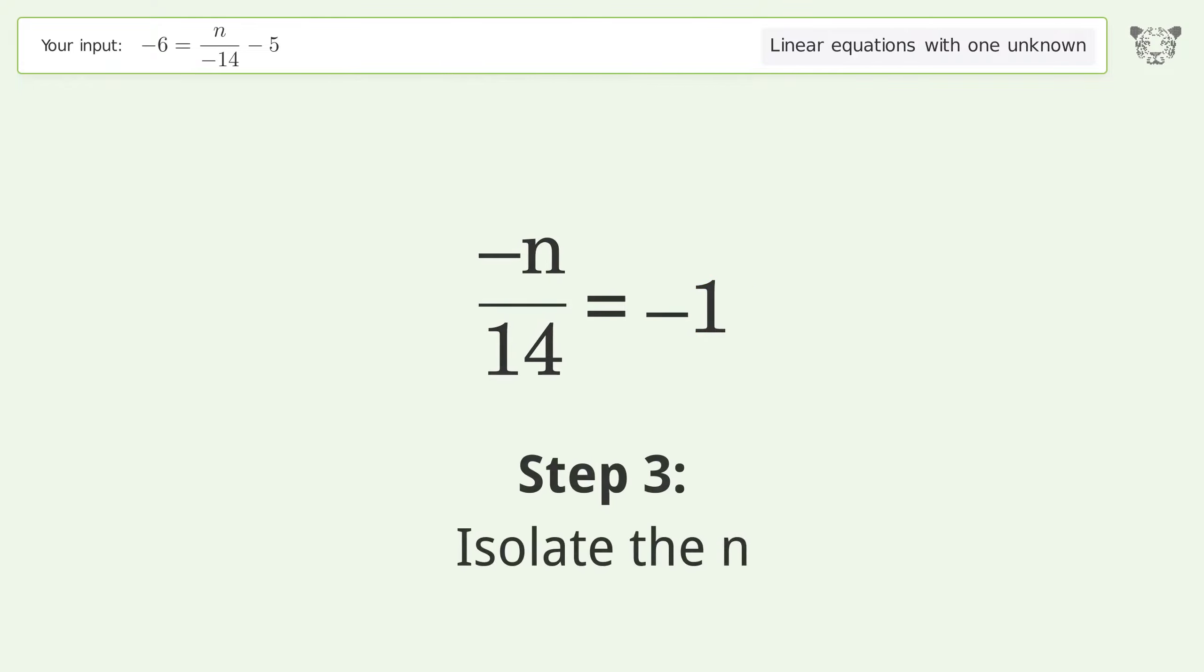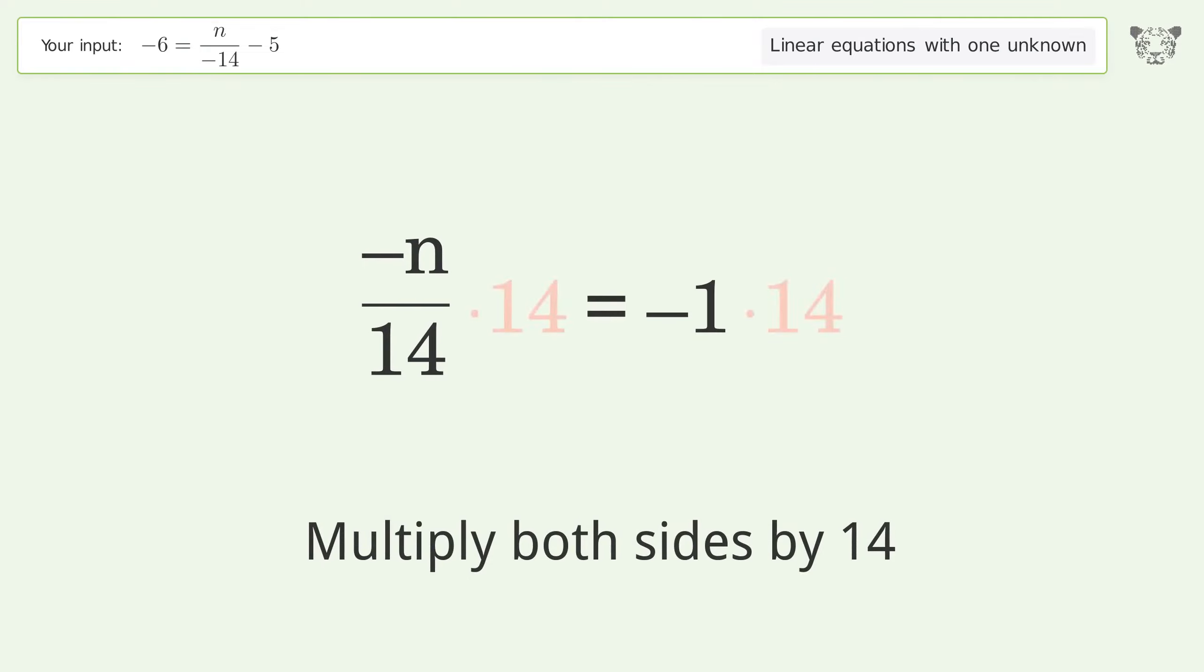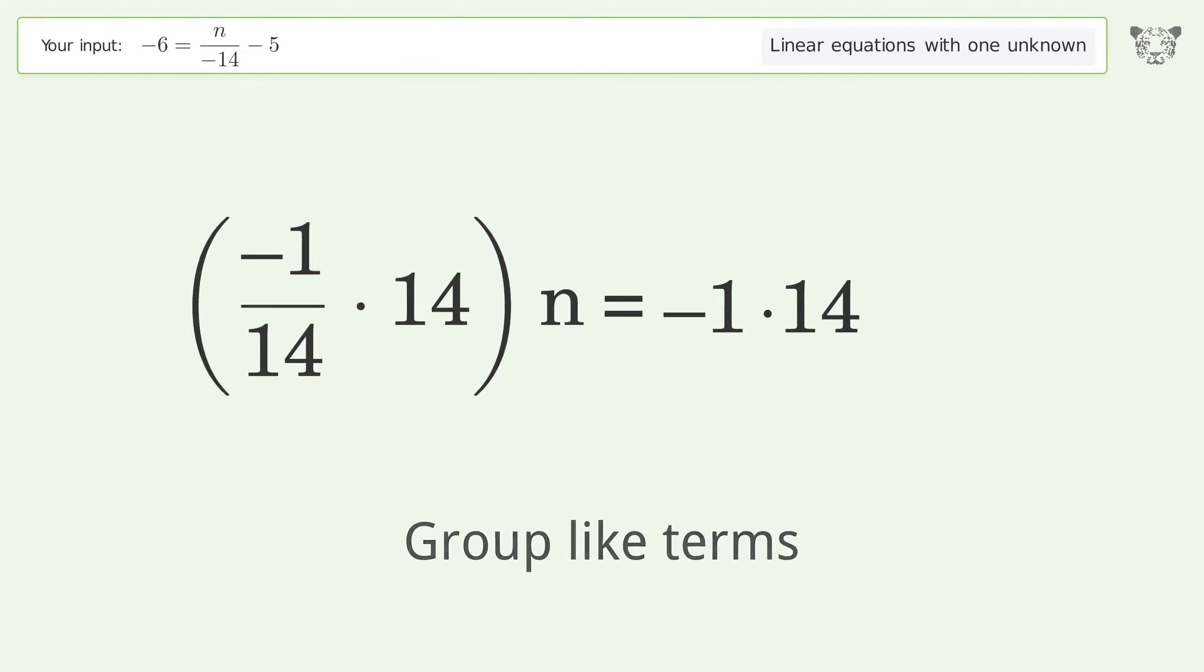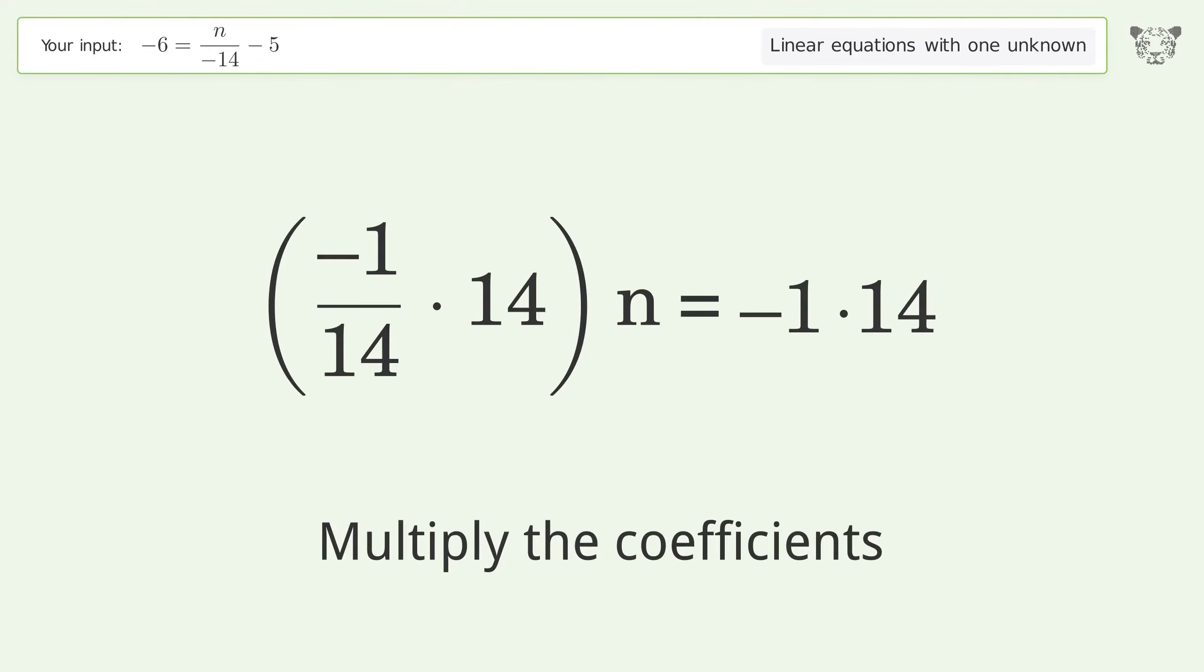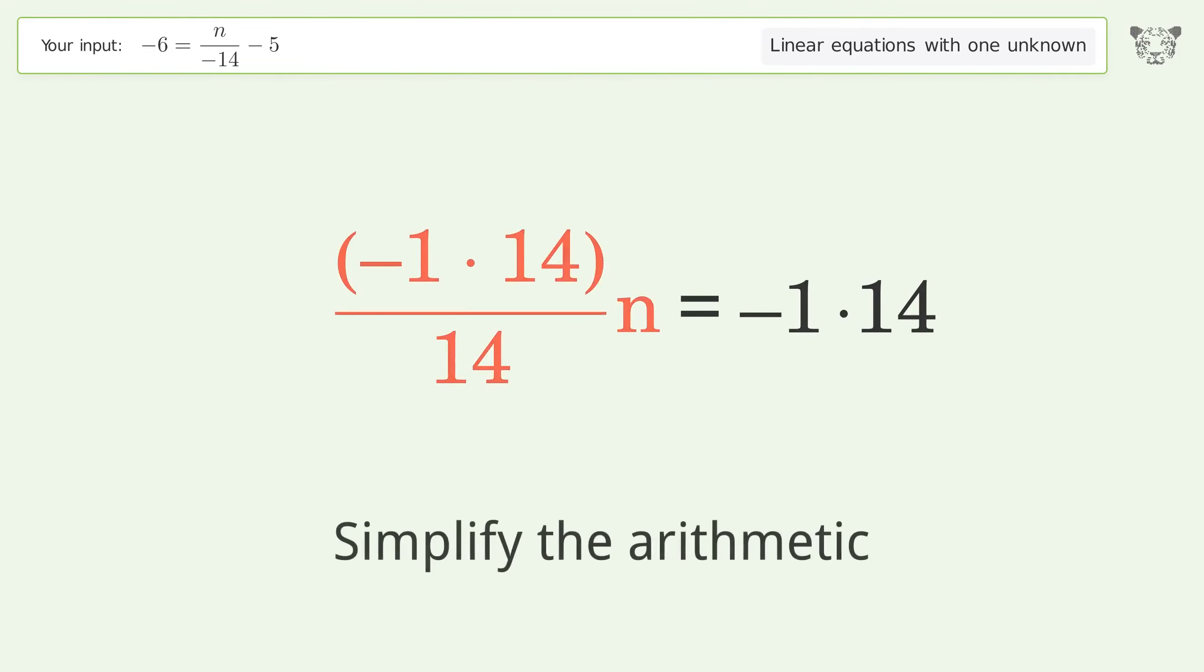Isolate the n. Multiply both sides by 14. Group like terms. Multiply the coefficients. Simplify the arithmetic.